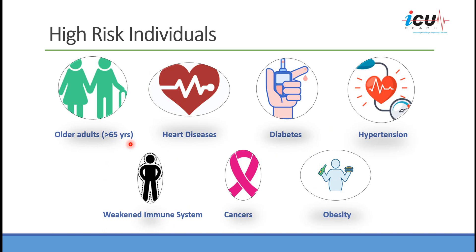We know that high-risk individuals who contract the virus will have a much worse outcome. These are older people above 65 — the mortality rate for people above 80 years old is close to 15%. The older the person, the higher the mortality rate, and this increased mortality starts at age 60 or 65. Patients with chronic heart disease such as congestive heart failure, diabetes, hypertension, weakened immune systems from immunosuppressive agents or steroids, different cancers, and obesity may also have a bad outcome.